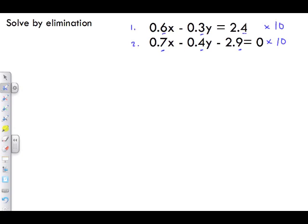Equation one, when we multiply it by 10, we're going to get 6x minus 3y equals 24, right? So we've eliminated our decimals.